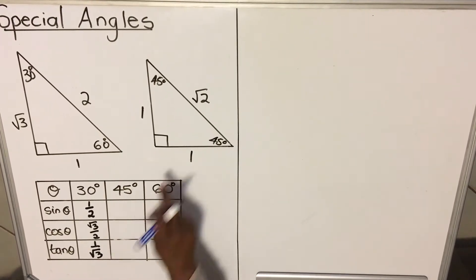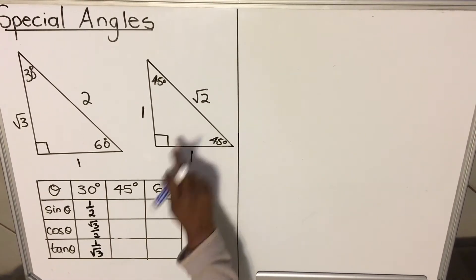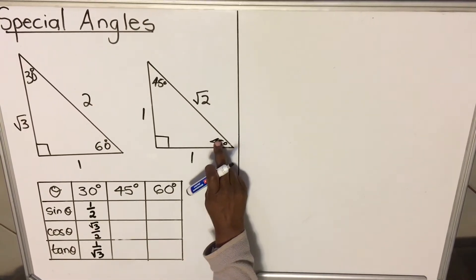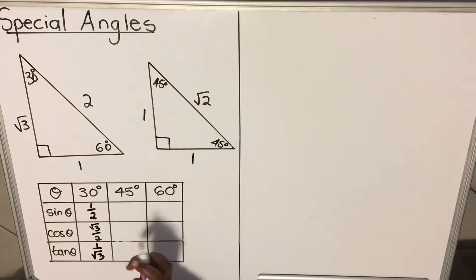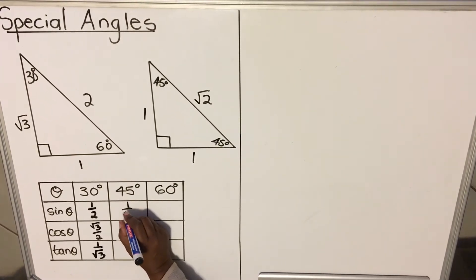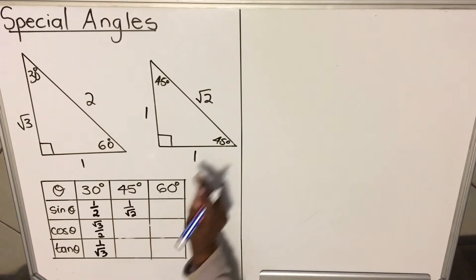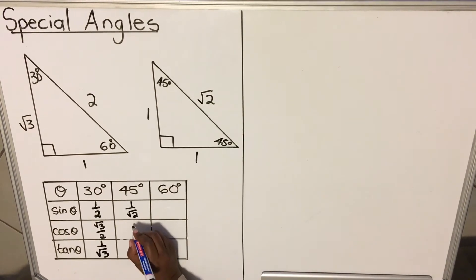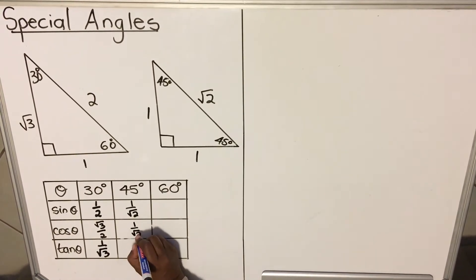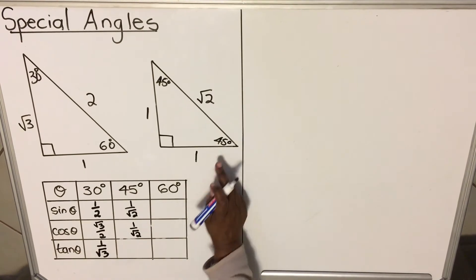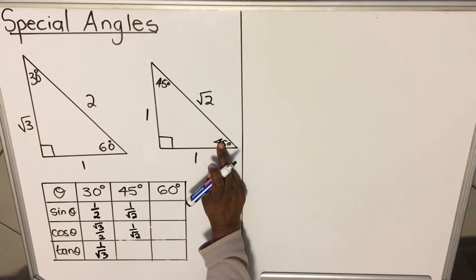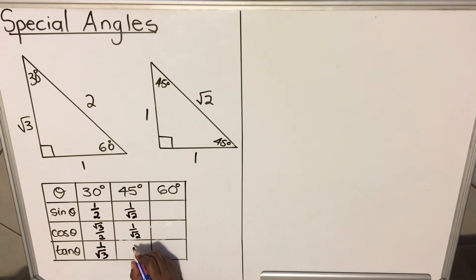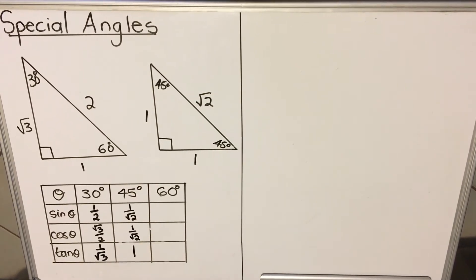Now we're going to use 45, which means we're going to use this triangle. Sine 45 — sine is opposite over hypotenuse — is 1 over root 2. Cos 45 is adjacent over hypotenuse, which is also 1 over root 2. And tan 45 — tan is opposite over adjacent — is 1 over 1, which equals 1.